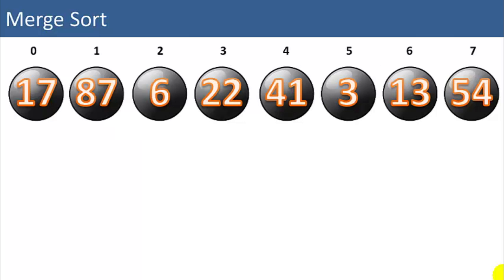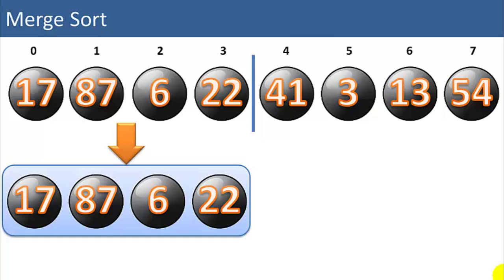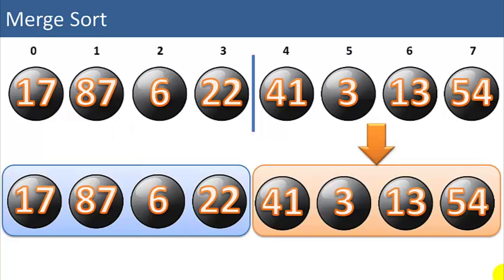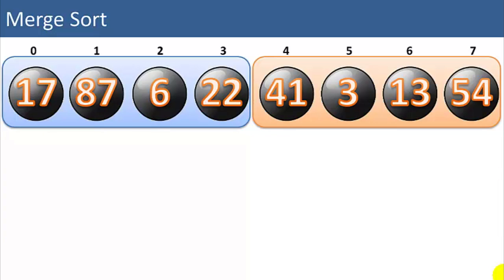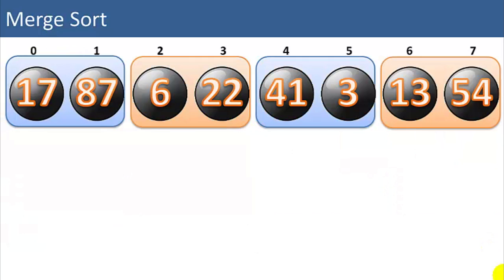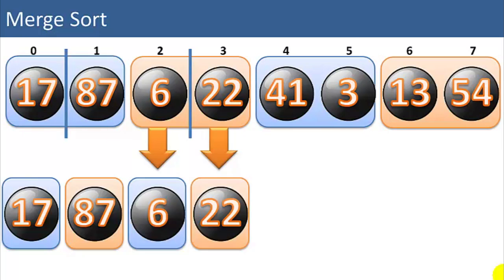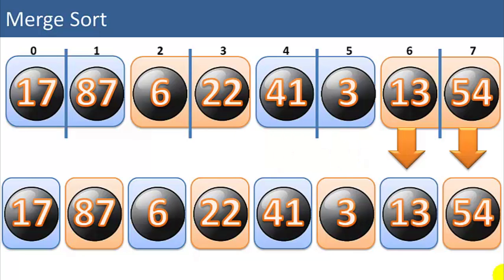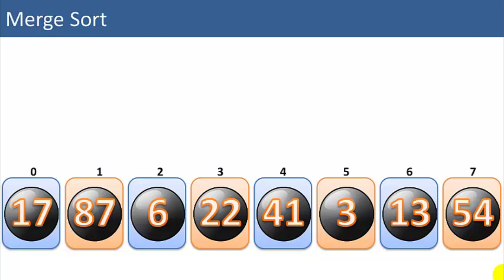I'm going to walk through a more detailed example with eight items in the list, numbered zero to seven. We'll start by splitting the list in half into a left list and a right list, each with four items. Then we take those two sub-lists and cut each of those in half into two smaller lists. Now we have four lists with two items each. We break them down one more step into eight lists with one item each. Since there's only one item in each list, we know each list is sorted. So now we have eight lists in sorted order, and we just need to merge them back together into one eight-item list.